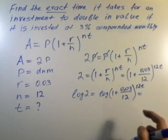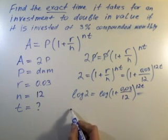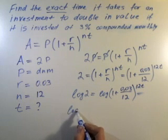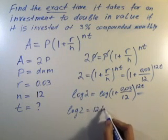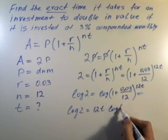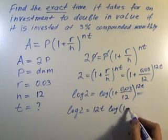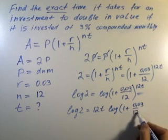So we get log(2) = 12T × log(1 + 0.03/12).